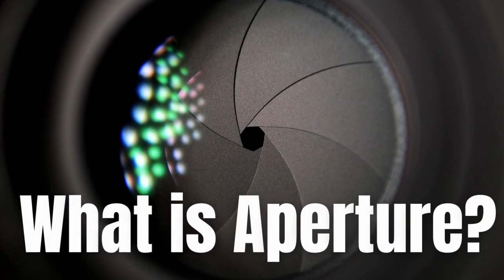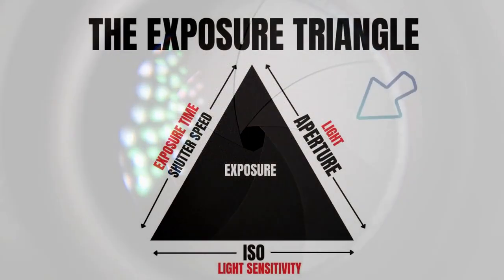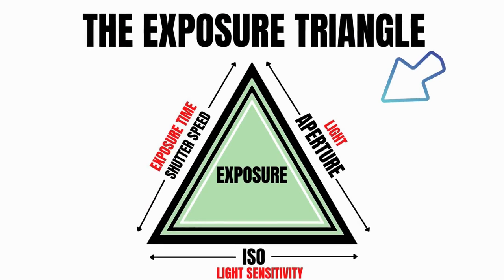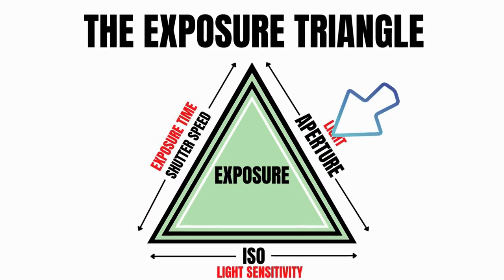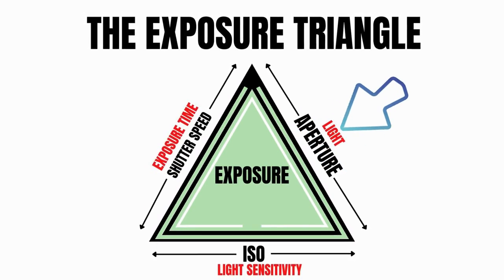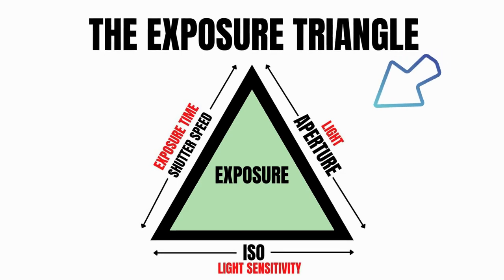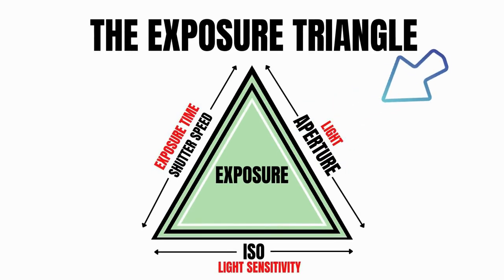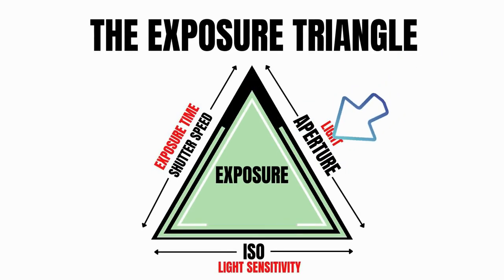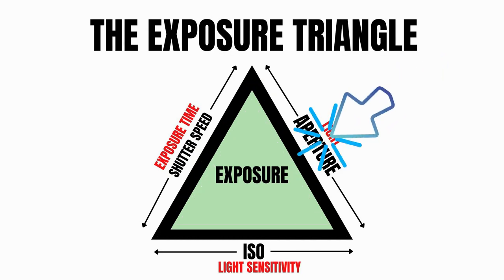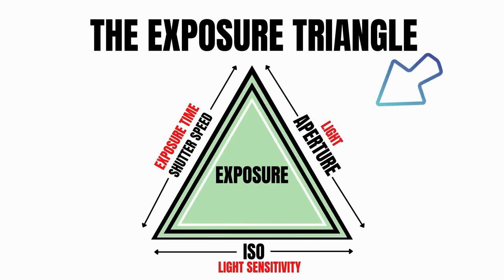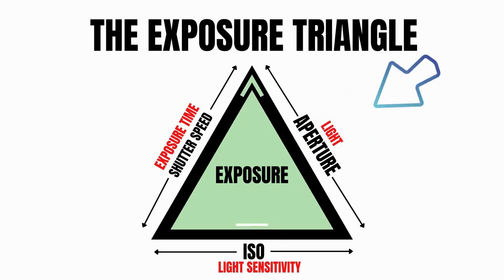What is aperture? Aperture is one-third of the exposure triangle, a key element that helps us to achieve perfect exposure. The exposure triangle is a key element in photography that fully explains how shutter speed, aperture, and ISO all work together to create a correctly exposed photograph.